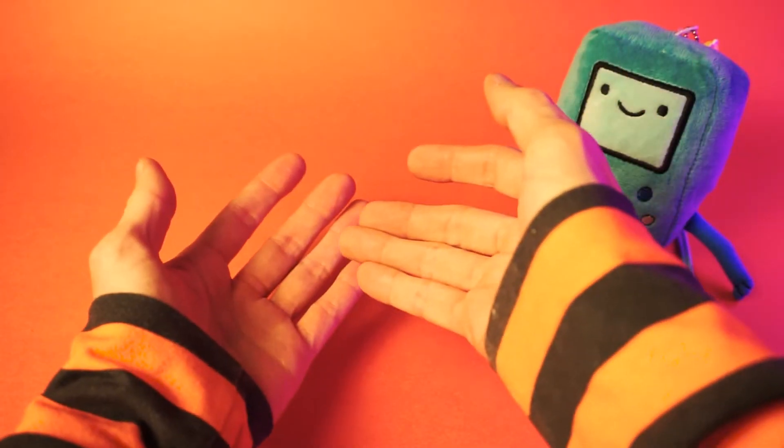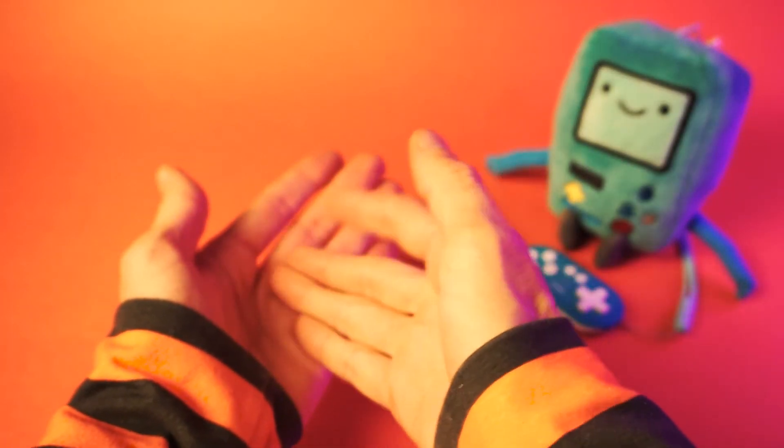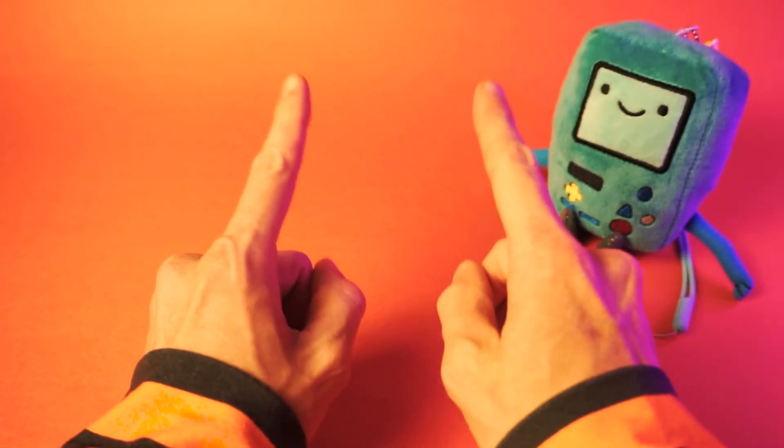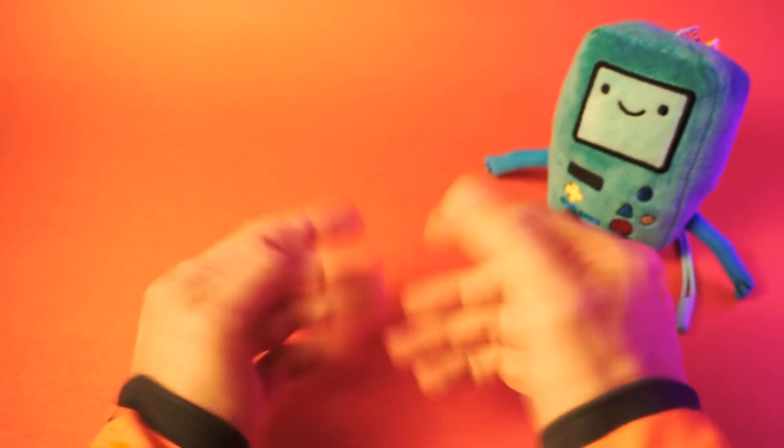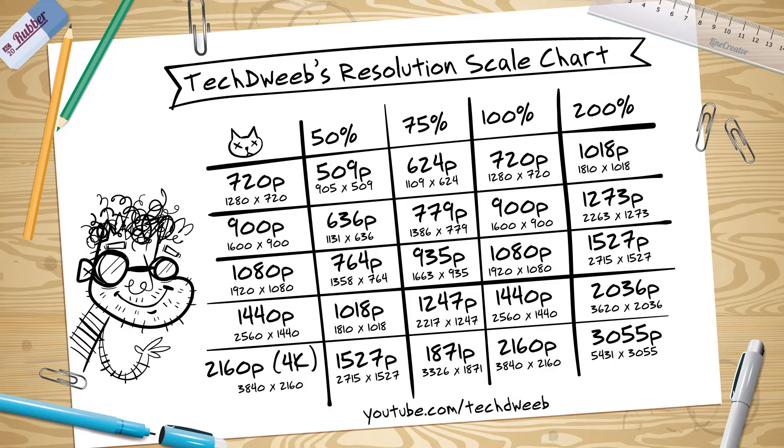And if you still don't understand, don't worry. I got your back. I know this is all hard, complicated math stuff, and you just want an easy answer. So, here you go. I made this handy chart. We have all the most common resolutions: 720p, 900p, 1080p, 1440p, and 4K, which is 2160p, which is confusing and doesn't make much sense.